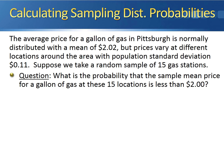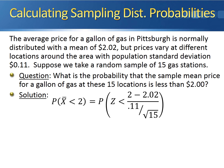All that's left to do is standardize x-bar and get the final probability. We want the probability that the sample mean gas price is less than $2. We standardize by computing z = (2 − 2.02) / (0.11 / √15), which gives us the probability that z is less than negative 0.7. Using the standard normal table, the area to the left of negative 0.7 is equal to 0.2420.